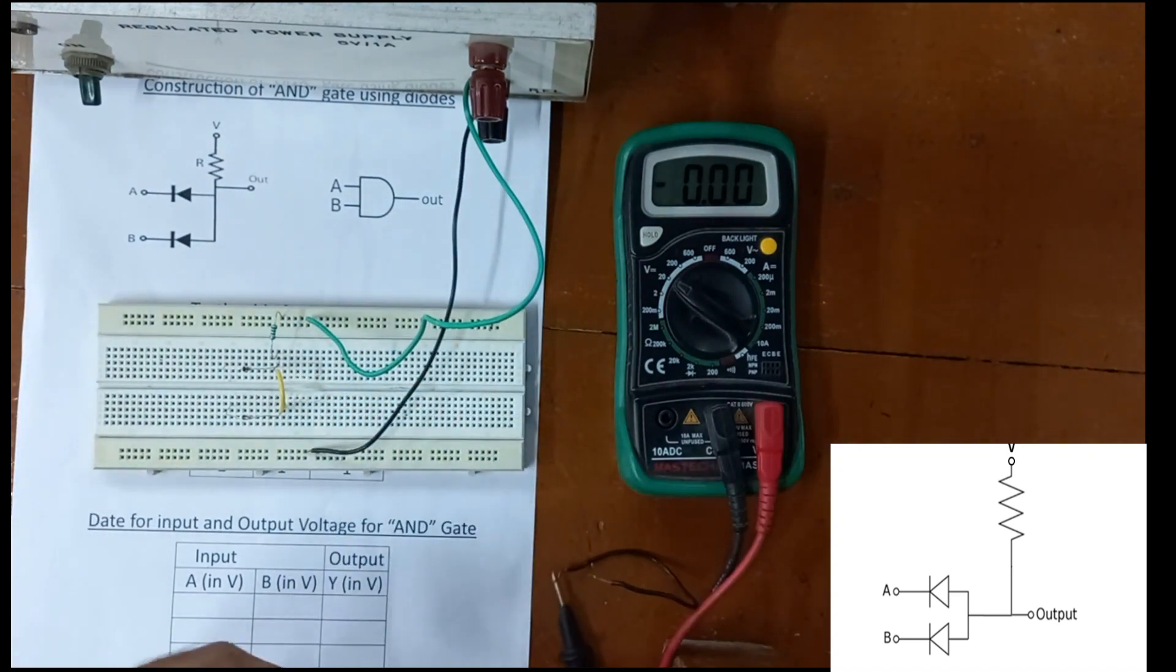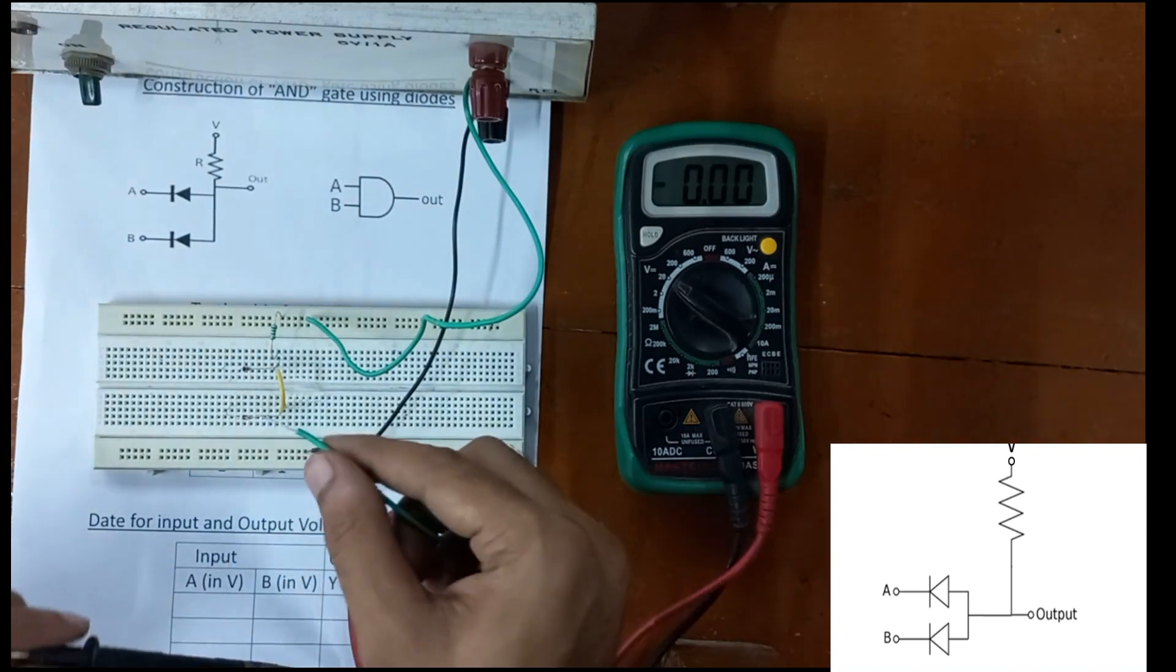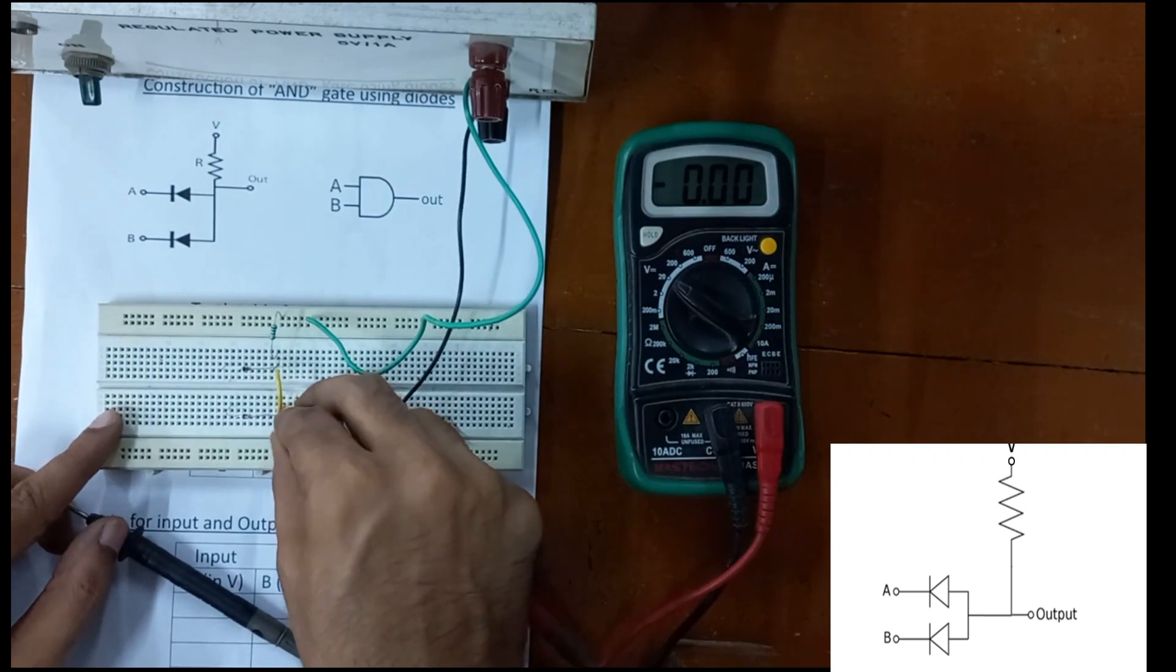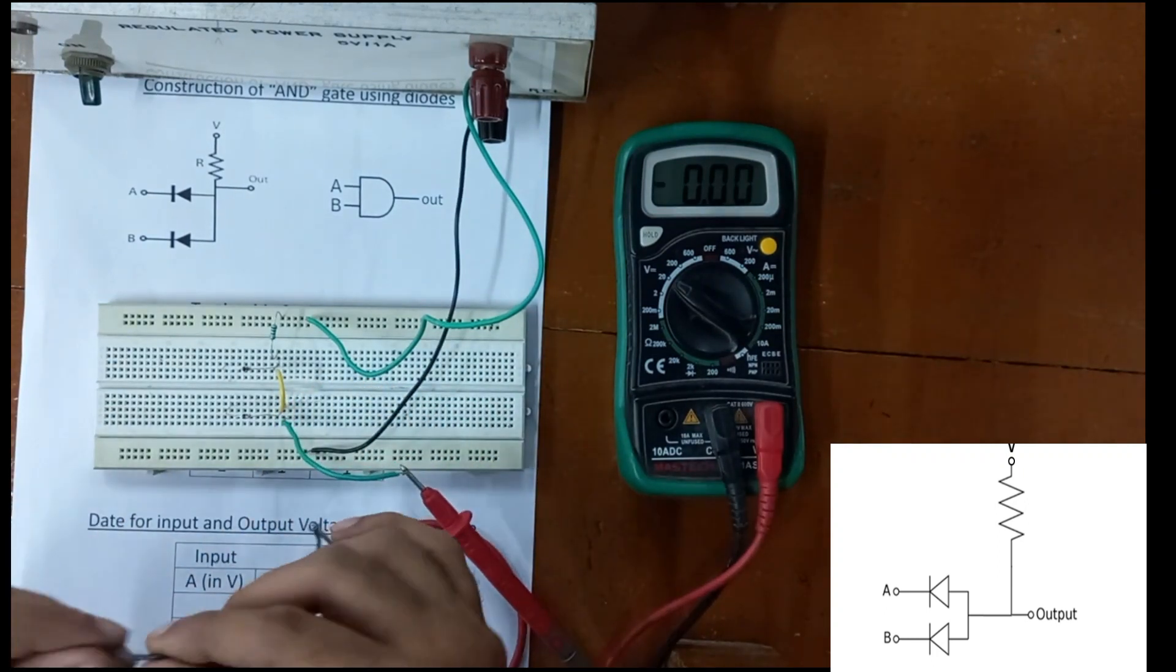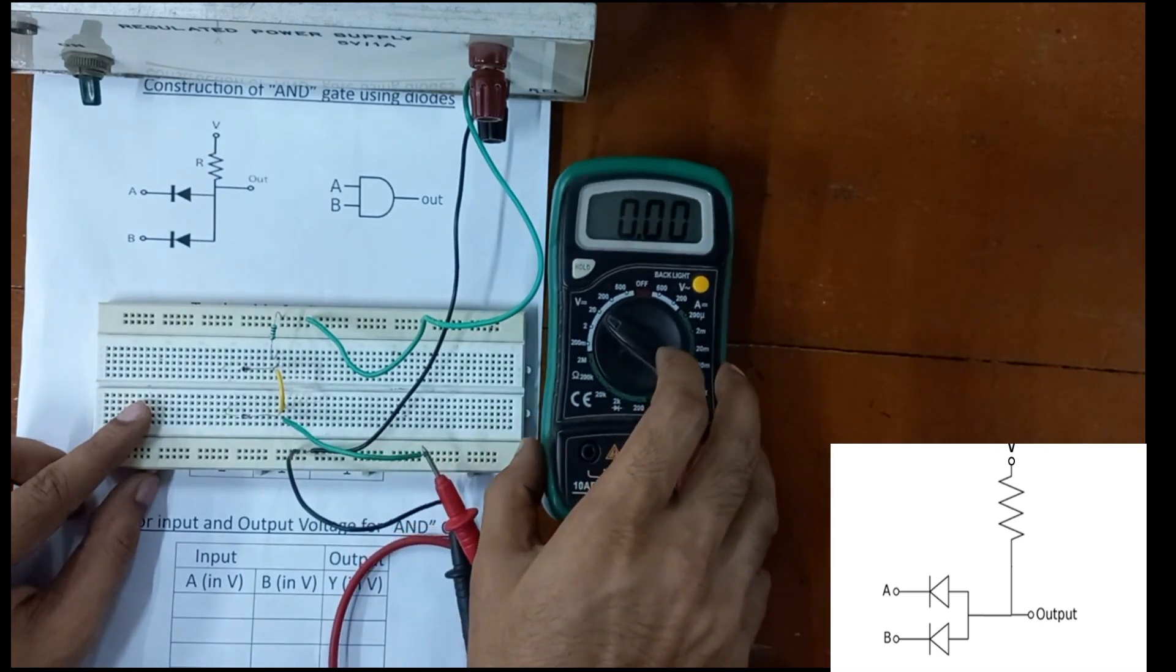Now let's connect the multimeter. The red end of the multimeter is connected to the diode and the black end is connected to the ground.